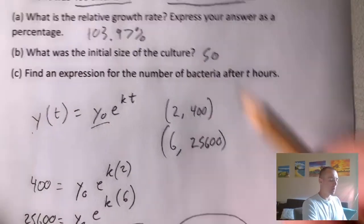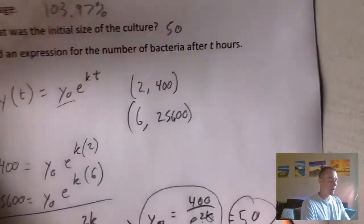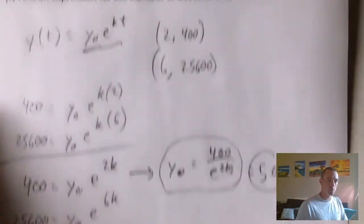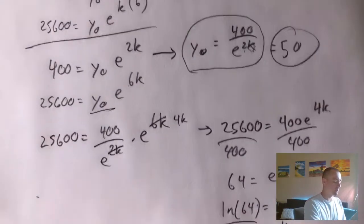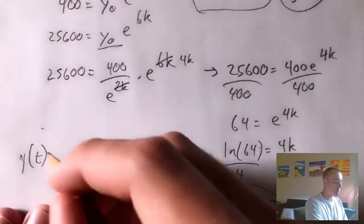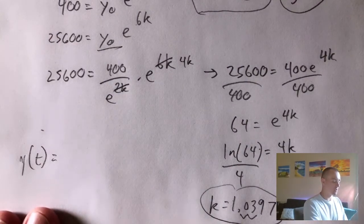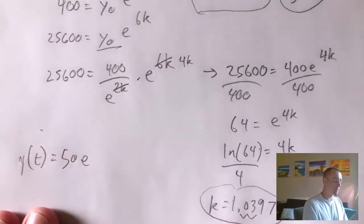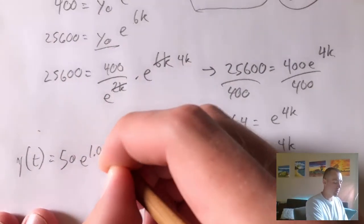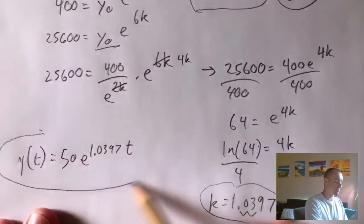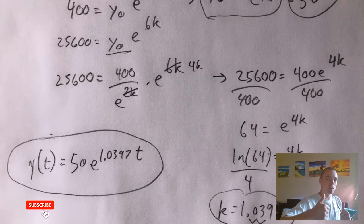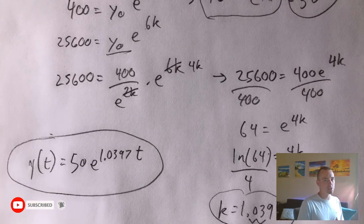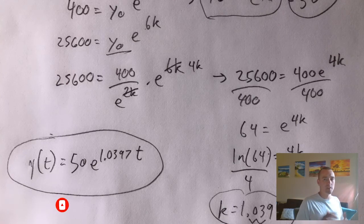Plugging both this K value and this Y sub zero value into our equation gives us the solution to part C — the expression for the number of bacteria after T hours: Y of T equals 50 times E to the 1.0397 times T. So this is our expression that tells us the number of bacteria after T hours. Again, if you found this video helpful, please be sure to hit that like button, hit the subscribe button, join the Jake's Math Lessons community, and we'll keep crushing it all term. Thanks and see you next time.